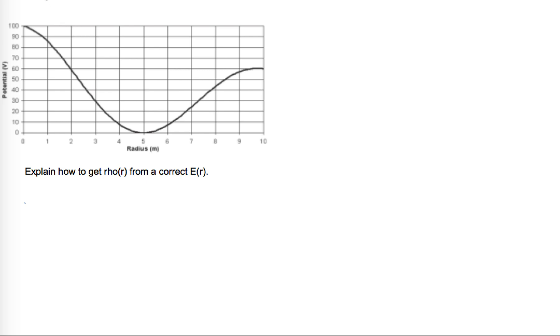Okay, so back for part E. In part E, we are told that the student has now checked the work, corrected the mistakes, and derived the correct expression for the function E of R, and the student now wants to find the charge density rho of R from a correct E of R.